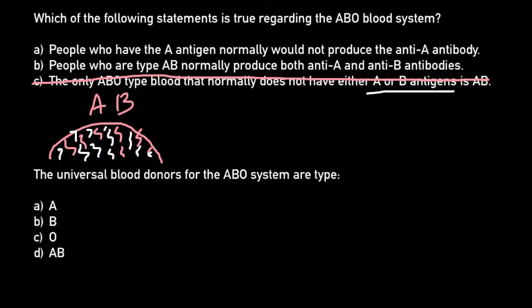So statement C is not correct. Statement B says people who are type AB normally produce both anti-A and anti-B antibodies — this is also not true, because the serum of blood group AB would not contain any antibodies at all. Antibodies fight proteins A and B, and such blood cannot contain antibodies A and B.